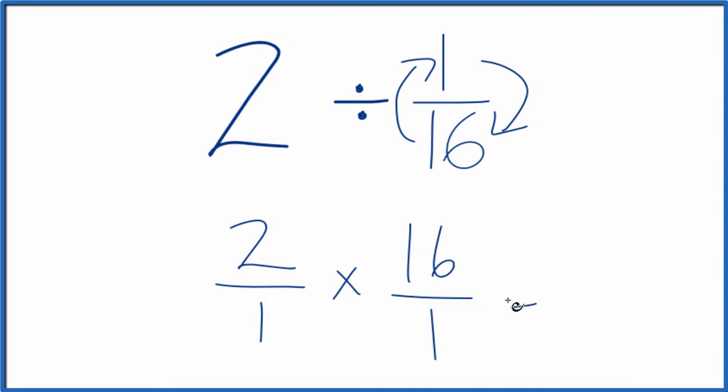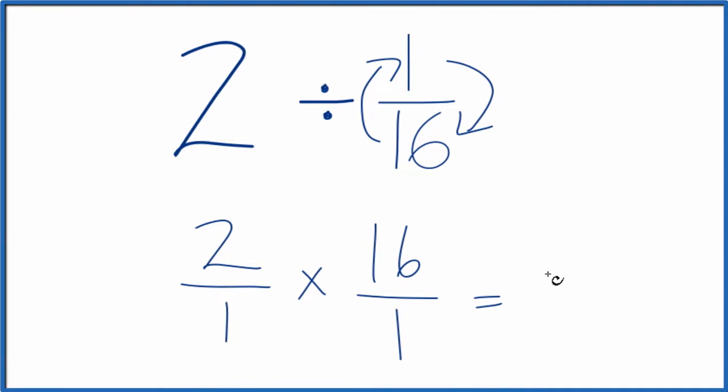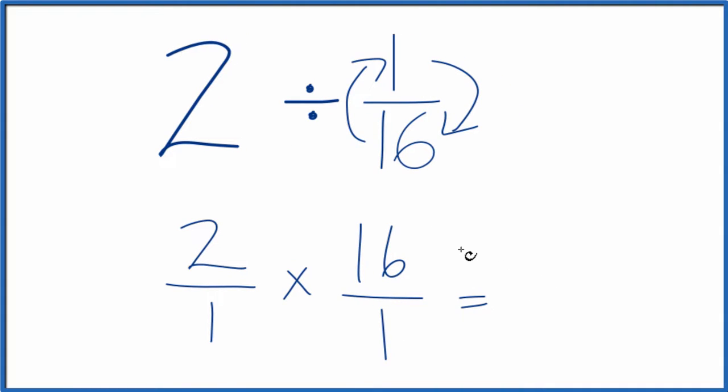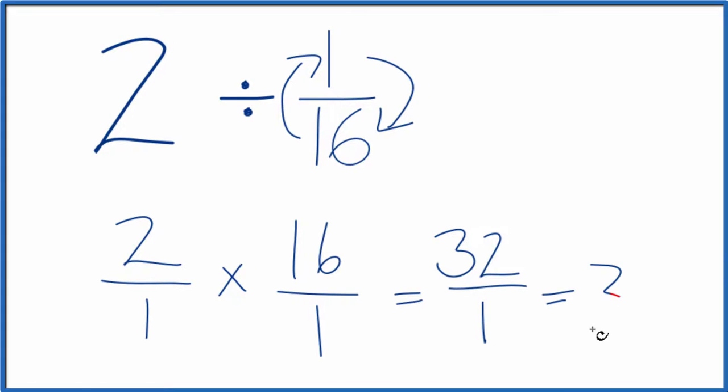Now, since we have these fractions and we're multiplying them, we multiply the numerators, then the denominators. That gives us our answer. 2 times 16 is 32. 1 times 1 is 1. And 32 divided by 1 is just 32.